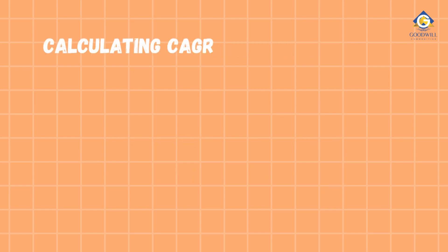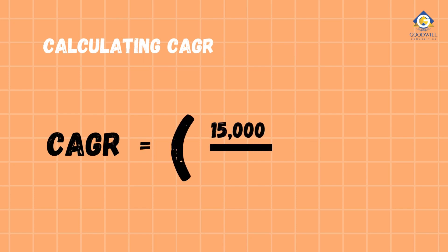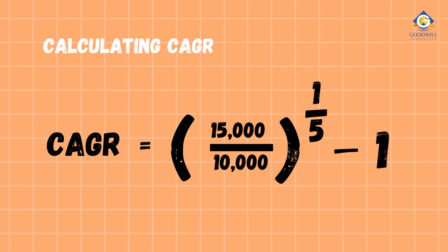To calculate CAGR: CAGR equals rupees 15,000 divided by rupees 10,000 to the power 1 divided by 5 minus 1. After plugging these values into the formula, you'll find that the CAGR for this investment is approximately 8.73%.